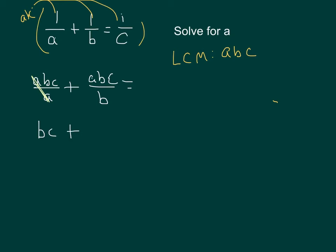What cancels in our second term is the B's, and we're left with AC equals. In our third term, we can see those C's cancel, and we're left with AB.